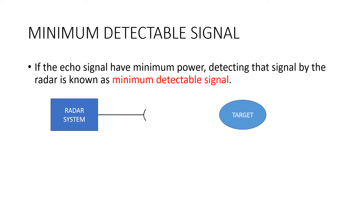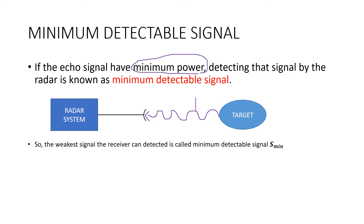If the echo signal has minimum power — that means the signal coming from the target has very low power and is detected by the antenna — then this signal is called the minimum detectable signal. The power of this signal is very low, or the minimum power. The minimum detectable signal is represented as S_min, which we already studied in last classes.